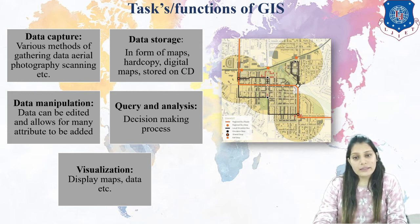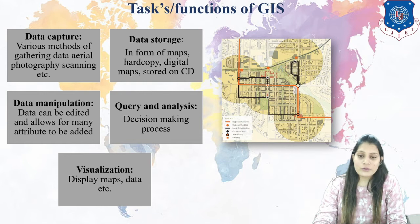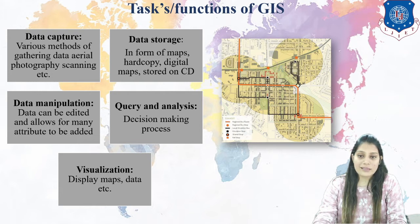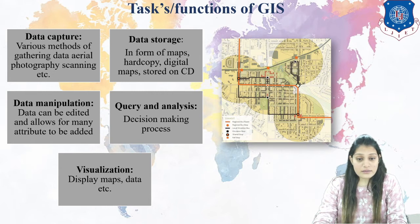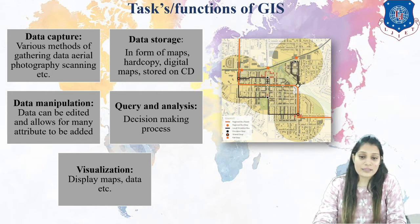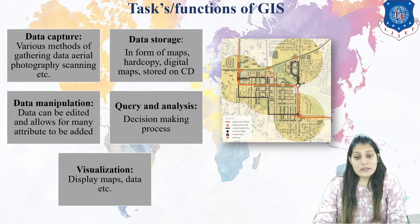Before going into detail, look at the image shown here. Data is stored into it. I have used some tools to get a desired output and it is showing something. You can see a transit system — the regional bus route, regional bus stops, local circulator of buses — all given with color coding. You can see circles highlighting particular things. That is how GIS works. So to get this output, we should know the tasks of GIS.